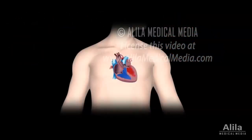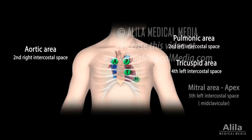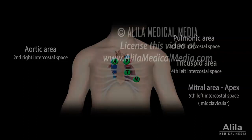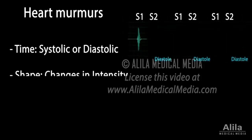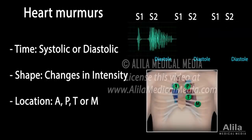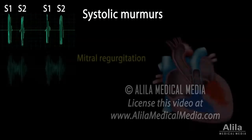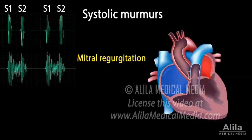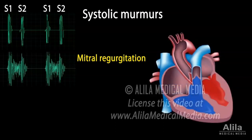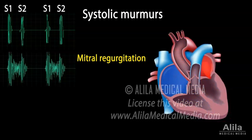Heart sounds are auscultated at four different sites on the chest wall, which correspond to the location of blood flow as it passes through the aortic, pulmonic, tricuspid, and mitral valves respectively. This is how similar defects associated with different valves are differentiated. Heart murmurs are whooshing sounds produced by turbulent flow of blood. Murmurs are diagnosed based on the time they occur in the cardiac cycle, their changes in intensity over time, and the auscultation site where they are best heard. Examples of conditions associated with common systolic murmurs include mitral valve regurgitation, when the mitral valve does not close properly and blood surges back to the left atrium during systole. The murmur starts at S1 when the AV valves close and maintains the same intensity for the entire duration of systole.